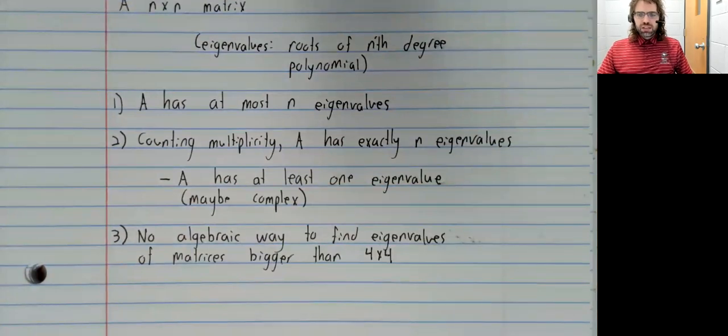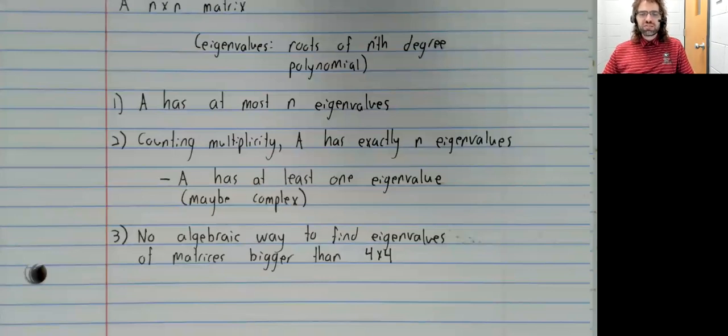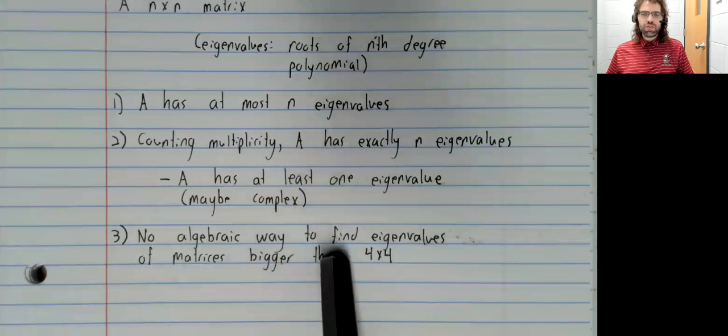And again, this is a result of polynomials restated. You can find the roots of second degree polynomials using the quadratic formula. Nobody ever learns them, but there is a cubic formula for third degree and a quartic formula for fourth degree. For fifth degree polynomials or higher, there is no formula for finding the roots. All you can do is numerically estimate them. And because that is true of roots, it's true of eigenvalues.